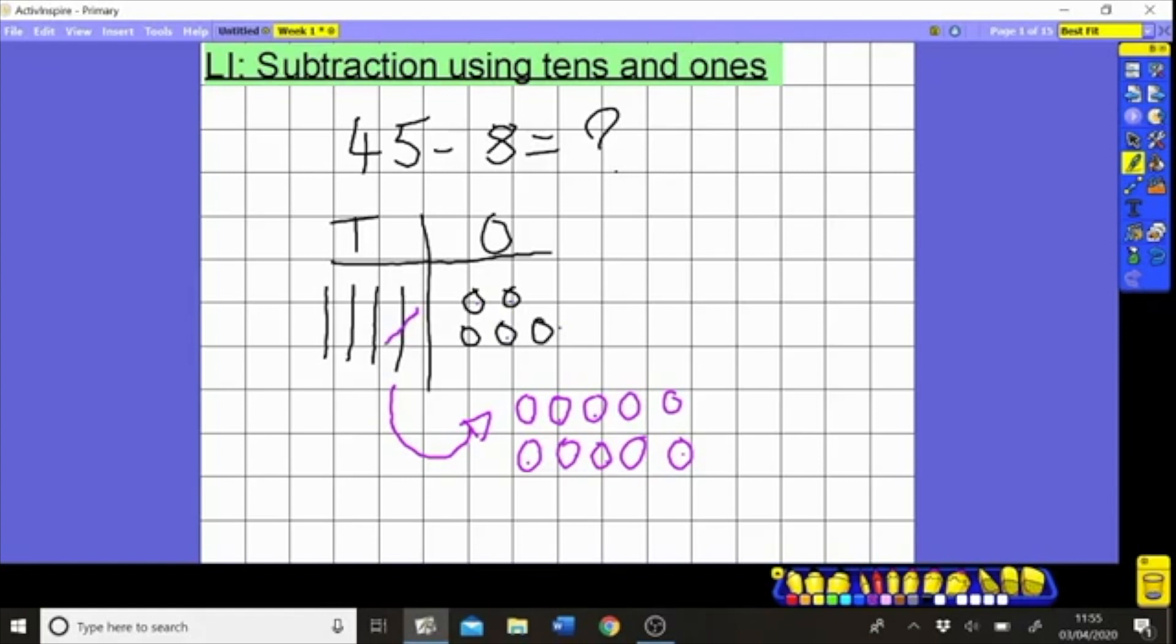Now let's take away our eight ones - one, two, three, four, five, six, seven, eight - and then we want to draw a circle around the ones that are left so we can add those up nicely. One, two, three, four, five, six, seven - we have seven ones and we have three tens left. So 45 subtract eight is thirty seven.